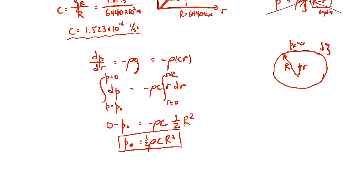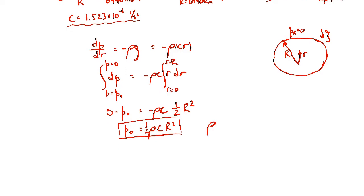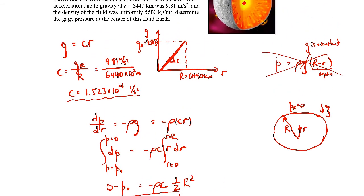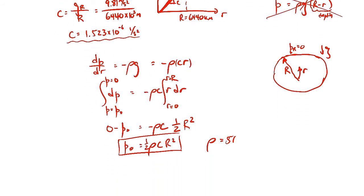So that's the gauge pressure at the center of the earth. So let's go ahead and plug in some numbers. We were told the density was 5600 kilograms per cubic meter. That's the density of like the various kinds of rock, like silica and lead and everything in between.